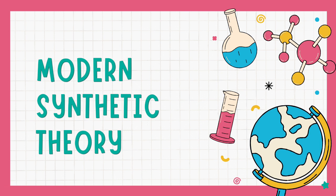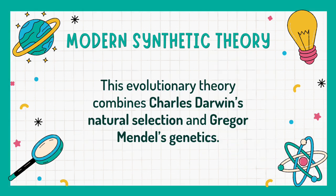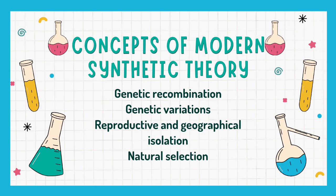Another theory of evolution is the modern synthetic theory. In 1937, Theodosius Dobzhansky published his book Genetics and the Origin of Species, introducing the modern synthetic theory. This evolutionary theory combines Charles Darwin's natural selection and Gregor Mendel's genetics. The concepts under this theory include genetic recombination, genetic variations, reproductive and geographical isolation, and natural selection.